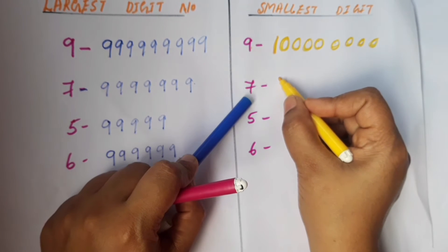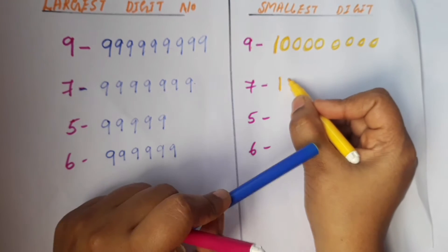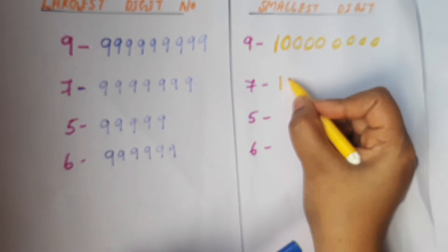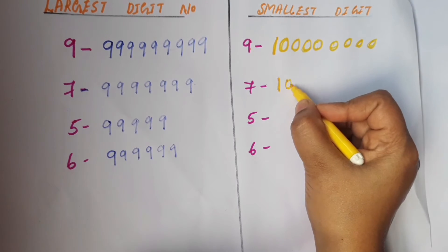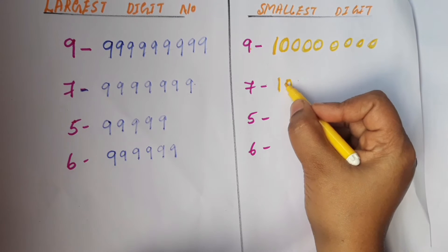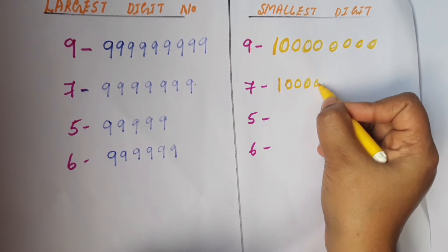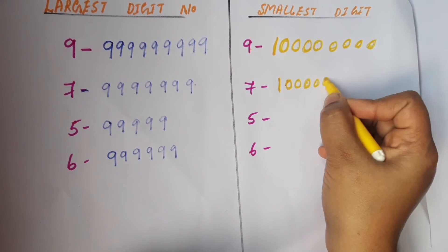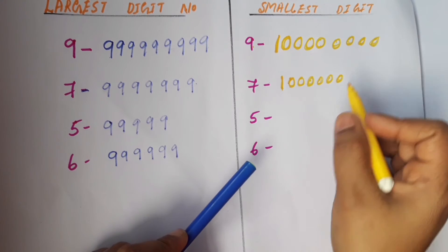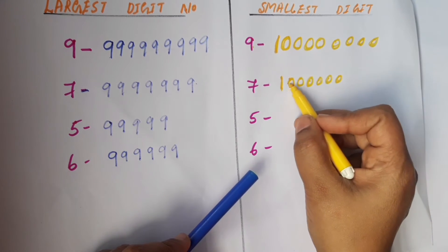To find the smallest seven-digit number, we have to write one first, then six times zero: one, two, three, four, five, six. So totally, one, two, three, four, five, six, seven — that gives the smallest seven-digit number.